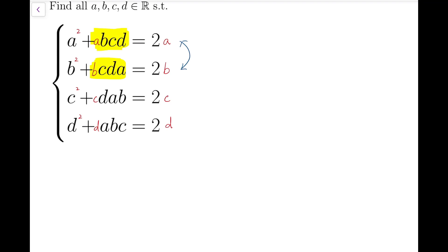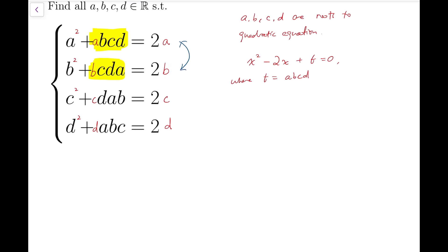Now, from these four new equations, we can say that a, b, c, and d are roots to the quadratic equation x squared minus 2x plus abcd equals 0. Or I can rewrite abcd to be some kind of constant t, where t equals abcd. We know there are exactly two roots for a quadratic equation, so that means these four numbers are not distinct. As in, some of them has to be equal. Now the question is, which of them are equal and which are not?